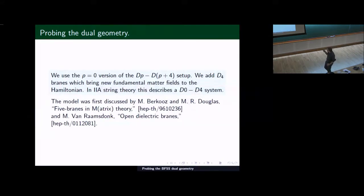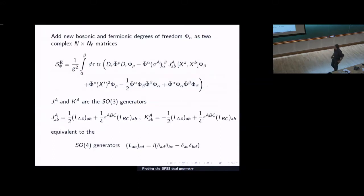So now let me proceed to probing the dual geometry. I'm going a little slower than I expected. This is a generalization or specialization of the D4 plus D0 setup. So we're going to add D4 branes in the gravitational picture. The setup was initially described by Berkowitz and Douglas and Ransdowne. So what we need to do is we need to add additional degrees of freedom to the Hamiltonian. These are now fundamental fermions and bosons. So we've added a fundamental sector to it.